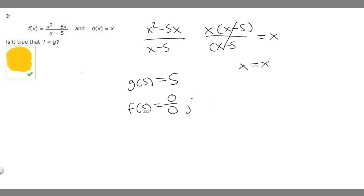So basically what this means is that they can't be the same, because if we plug in 5 into this one, we're going to get 0 over 0, and if we plug in 5 into this one, we're going to get 5. That's the only value they differ on, but because they are not the same for that one value, that means they can't be equal. So is it true that f is equal to g? No, it's not true.